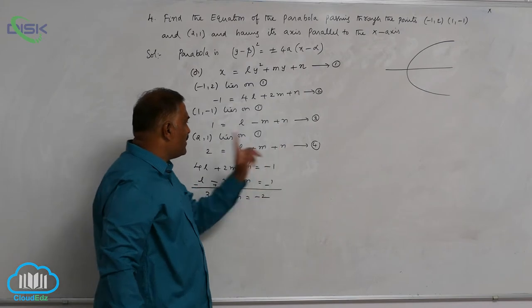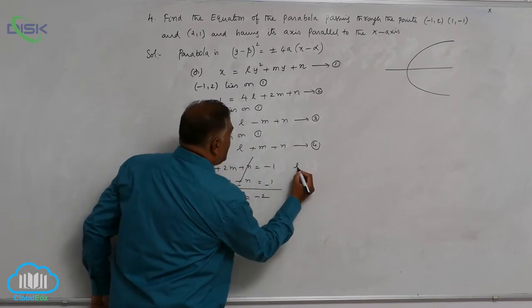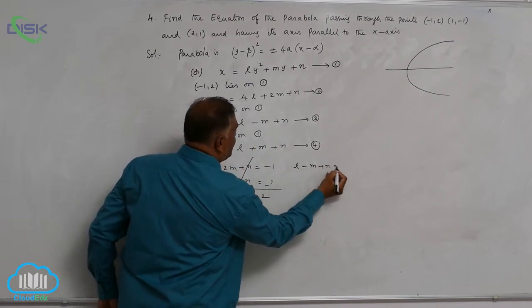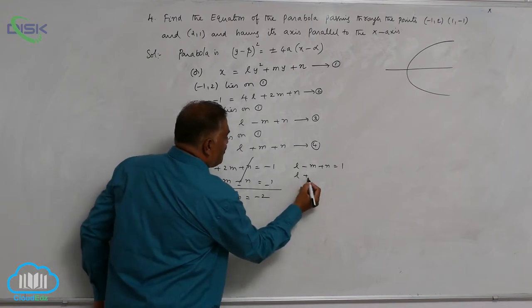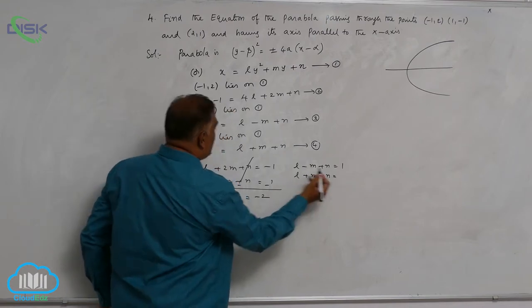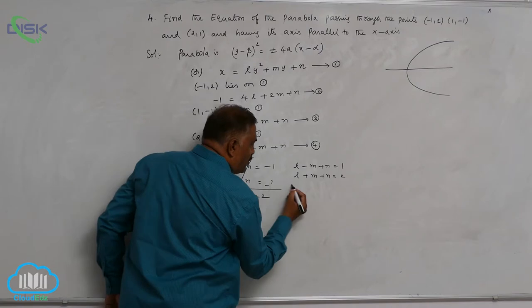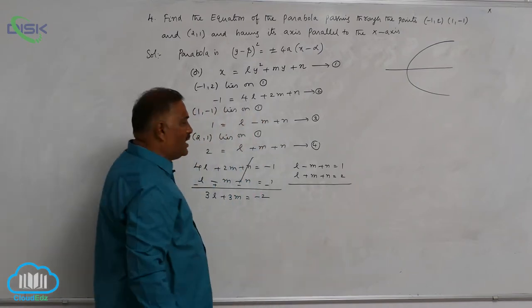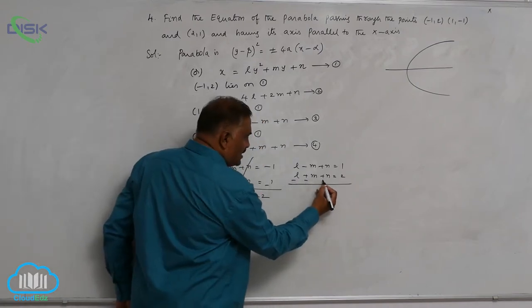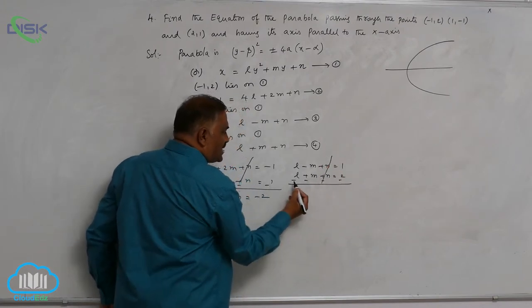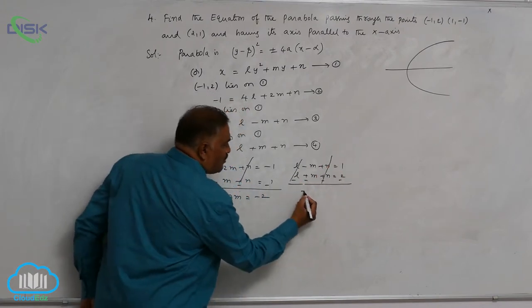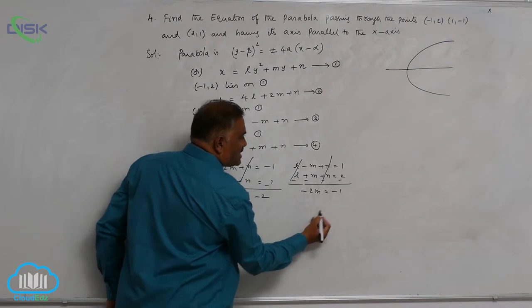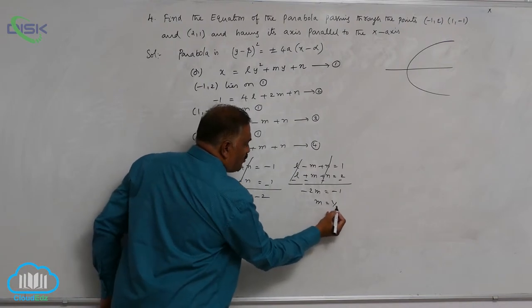Again, you take these two equations. This is l - m + n = 1, and l + m + n = 2. Now, if you go for subtraction, n gets cancelled, l gets cancelled. -2m = -1. So m = 1/2.